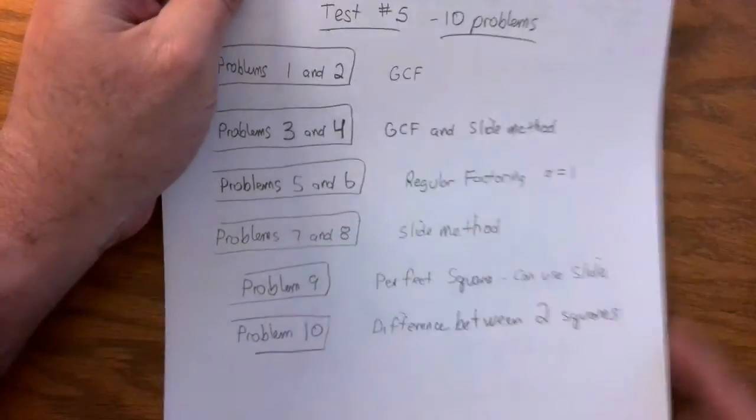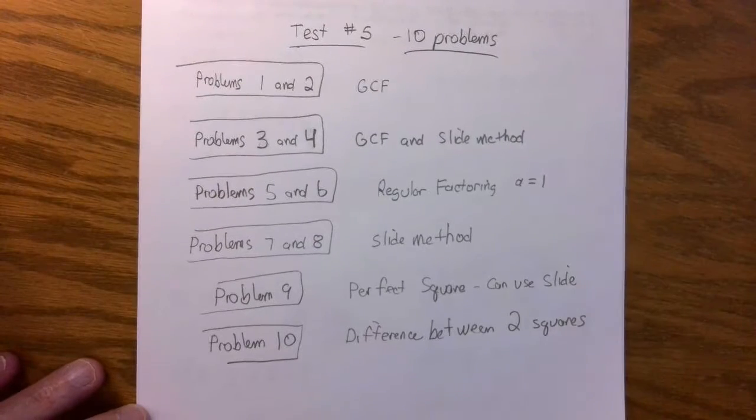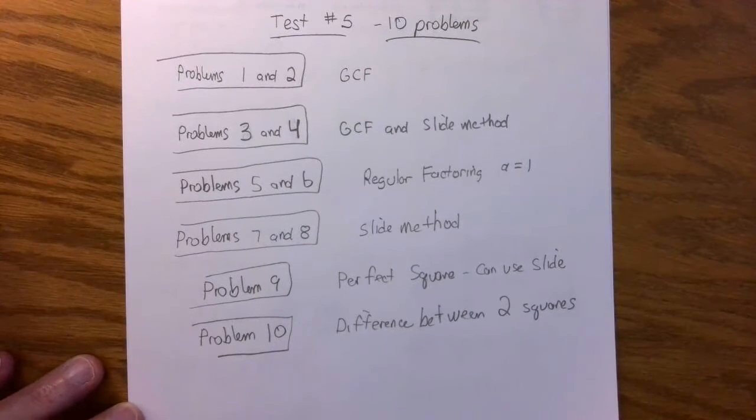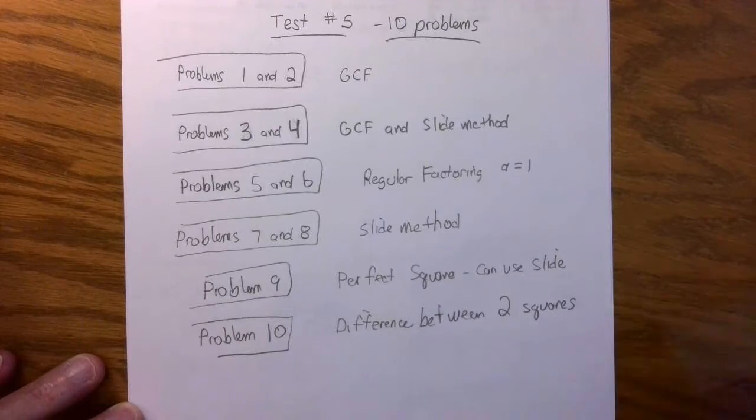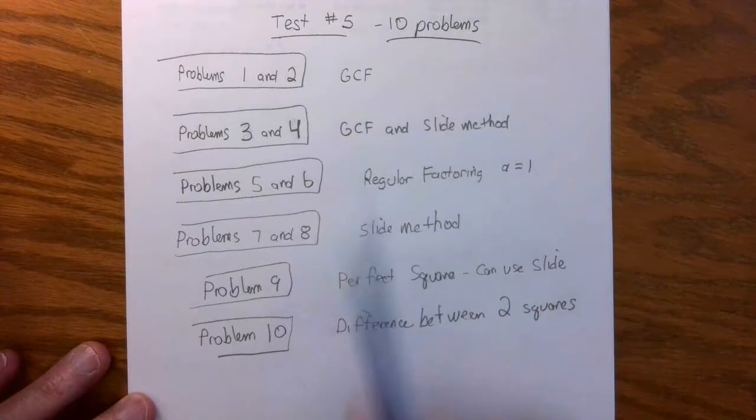Hello, everyone. Let's just look at the test. We're going to practice for the test right now. Test number five is 10 problems. The first two problems, you just have to take out a GCF and then factor it as normal.